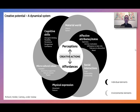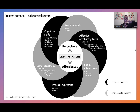By reviewing the literature I developed the model you see on your screen, which represents what is the creative potential system and how it can help someone to behave more creatively. There are two strands interacting together: creativity emerges from the interaction between individual characteristics and the environment in which an individual exists.